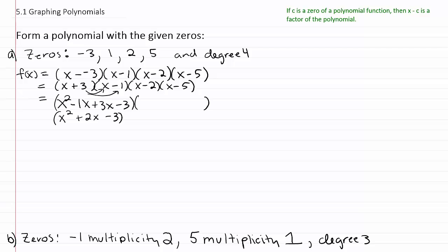Let's get the second trinomial by doing x times x, which gives us x squared. Then x times negative five is negative five x, and then negative two times x is negative two x, and then negative two times negative five is positive ten. Combining like terms, the second trinomial is x squared minus seven x plus ten.